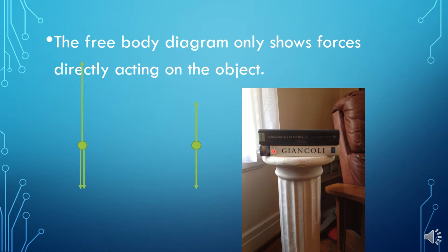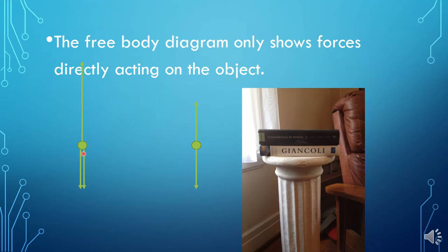If I draw the free body diagram for the bottom textbook, I would have the normal force from the column, the force of gravity on the textbook, and a force pushing downwards from the green textbook on top. We know this textbook is not accelerating, so the sum of these forces must equal zero. That's why the normal force arrow from the column pointing upwards is so much longer — it has to balance both the weight of the white textbook and the downward force from the green textbook.